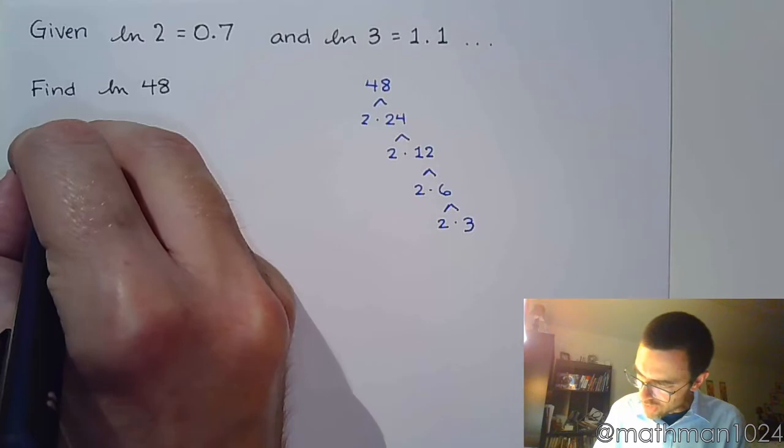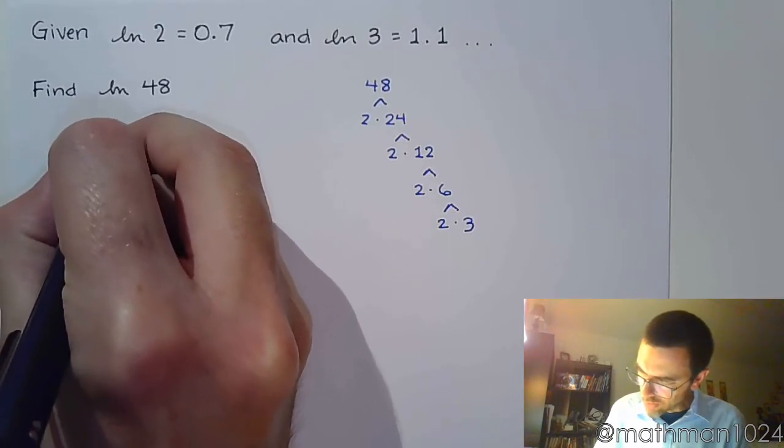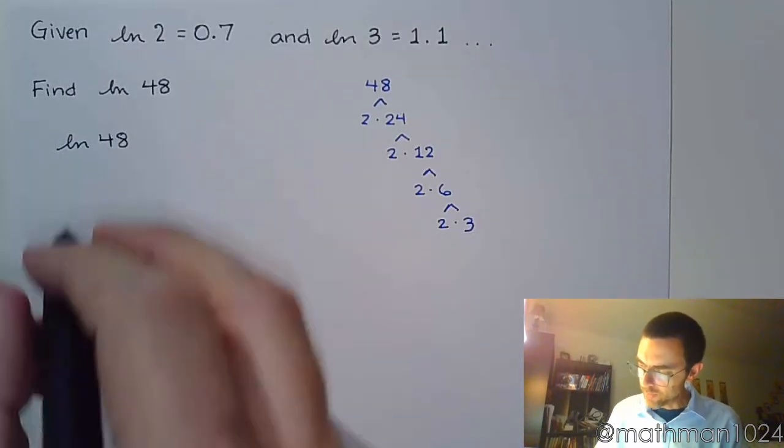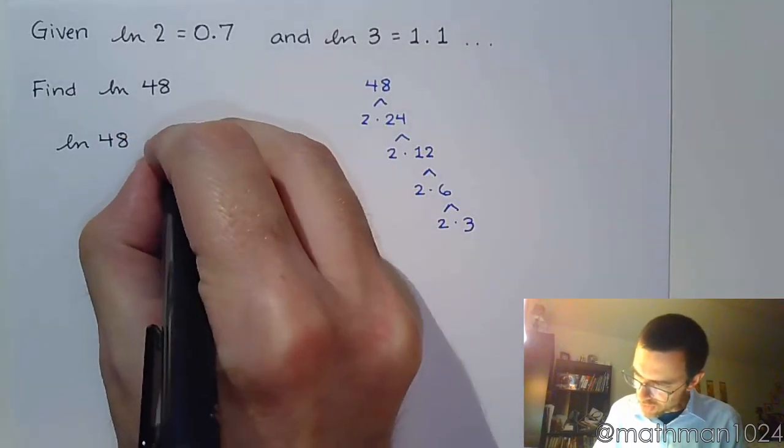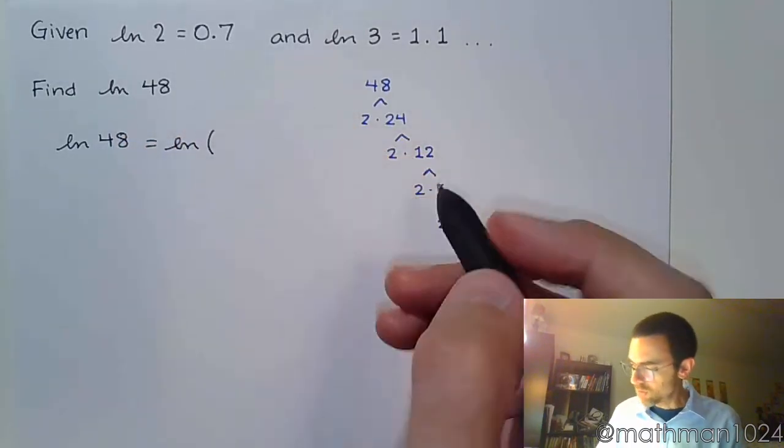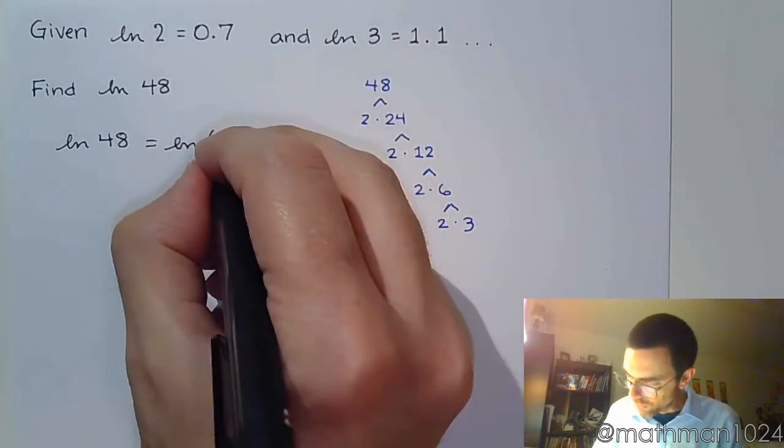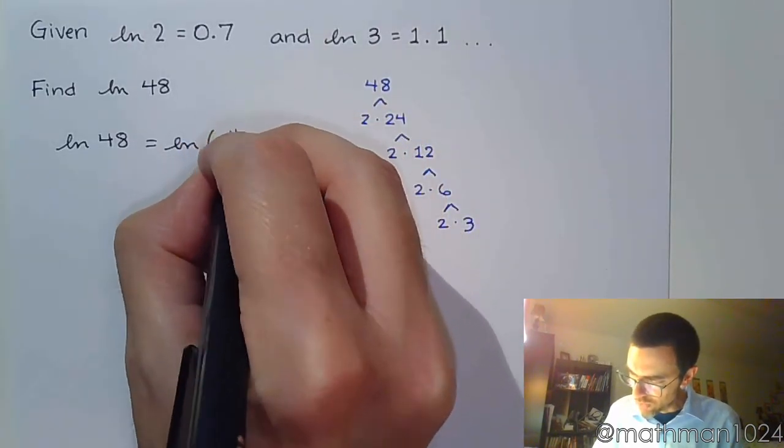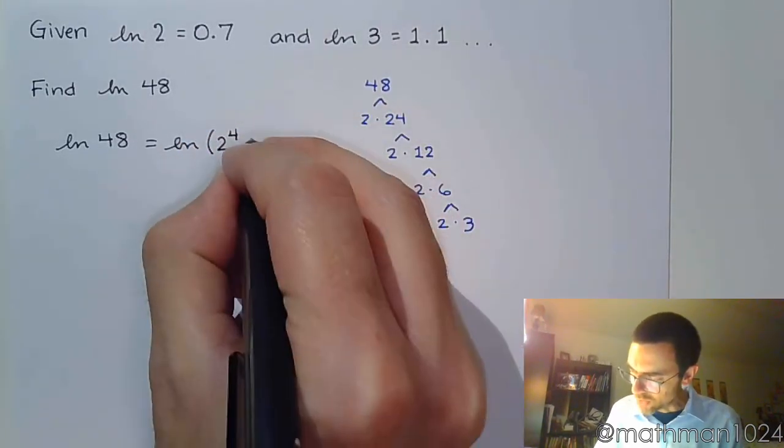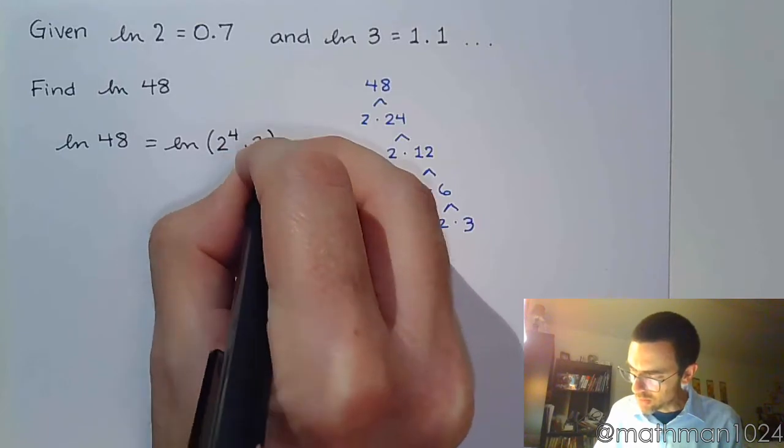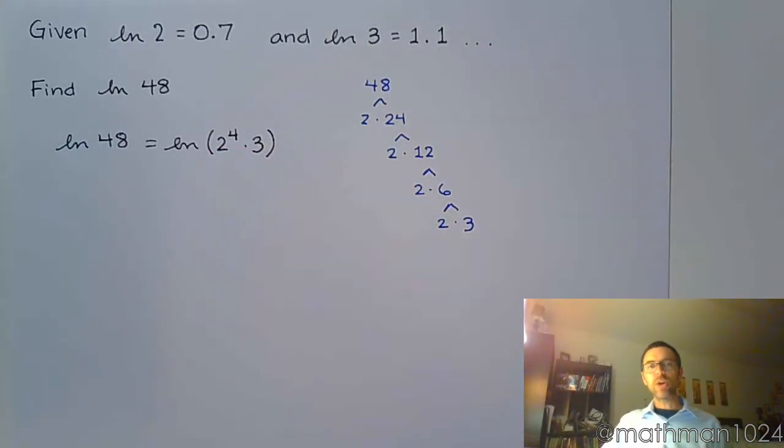So the natural log of 48 means finding the natural log of, look what we have here: 1, 2, 3, we have 4 factors of 2, and we have 1 factor of 3. So we break this down in terms of its prime factors, and then we can use those properties of logarithms.